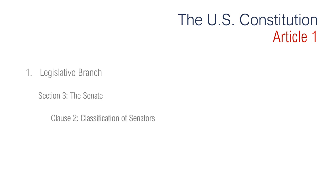Section 3, Clause 2 is regarding the classification of senators or their elections. One third of the Senate seats are open to election every two years. In contrast, all members of the House of Representatives are elected every two years. A senator's term is six years long; a representative's term in the House is two years long. Every two years, a congressional election is held, at which one third of the senators will run and every member of the House will run.